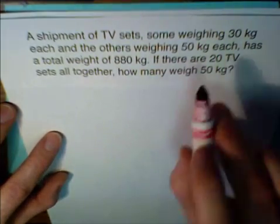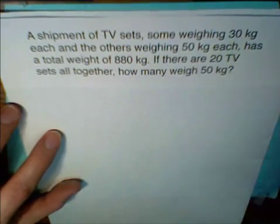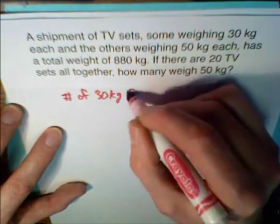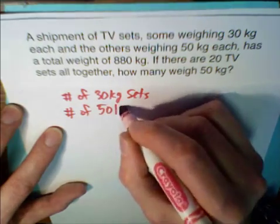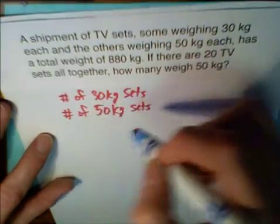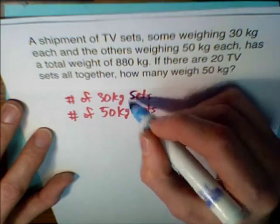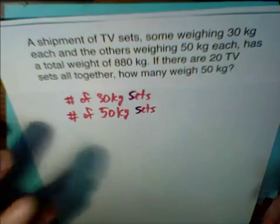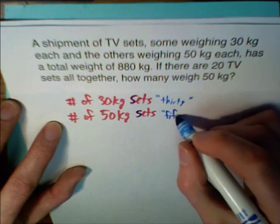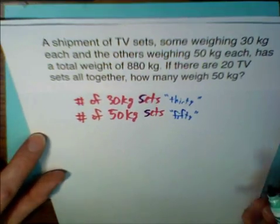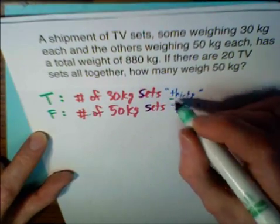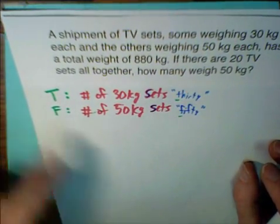So we've got 30-kilogram sets and 50-kilogram sets, and we know there are 20 of them altogether. Our variables are going to be the number of 30-kilogram sets and the number of 50-kilogram sets. Now, picking variables — S would be terrible because they're both sets, and T for TV doesn't help either. So I'll use T to represent the number of 30-kilogram sets and F to represent the number of 50-kilogram sets. Now that I've picked my variables, I'm ready to write the equations.